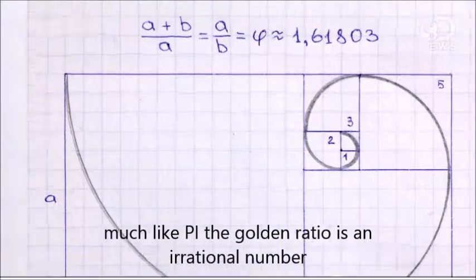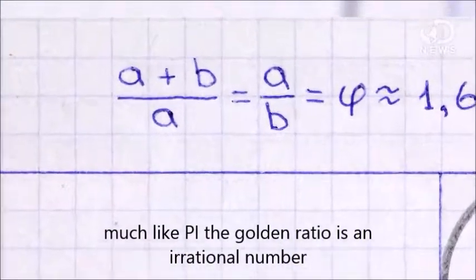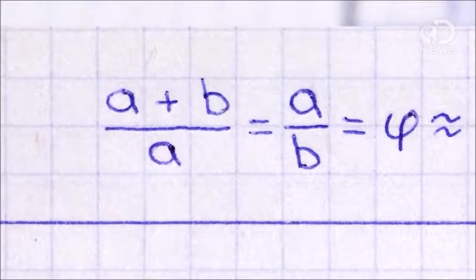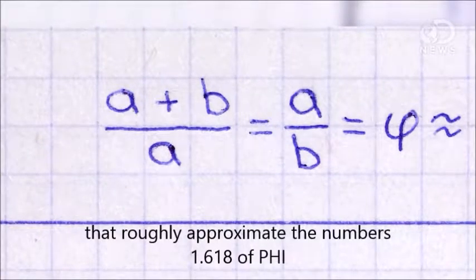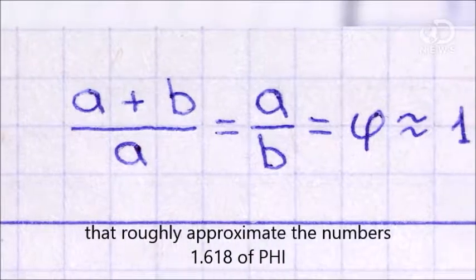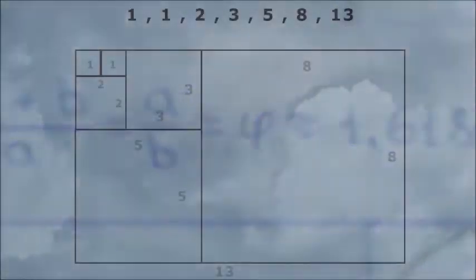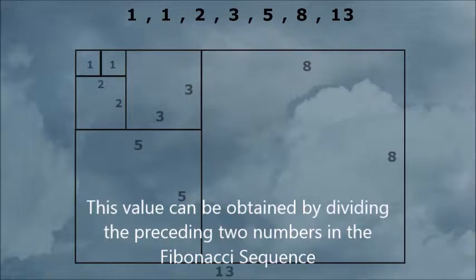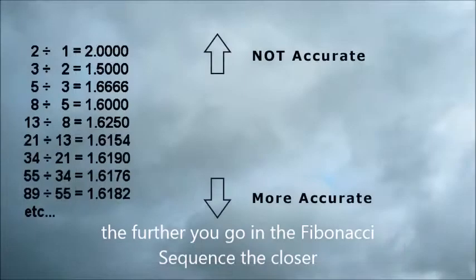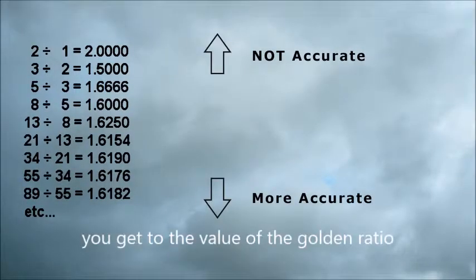Much like pi, the golden ratio is an irrational number that roughly approximates the number 1.618, or phi. This value can be obtained by dividing the preceding two numbers in the Fibonacci sequence. The farther you go in the Fibonacci sequence, the closer you get to the value of the golden ratio.